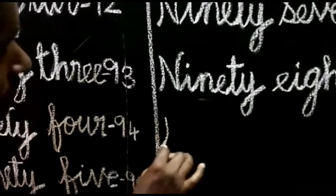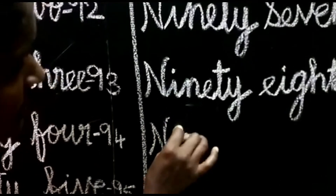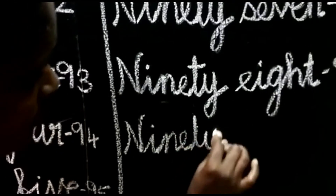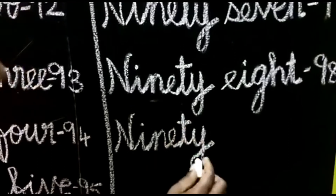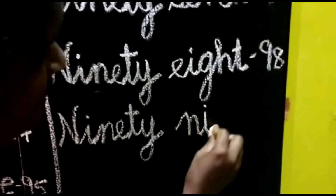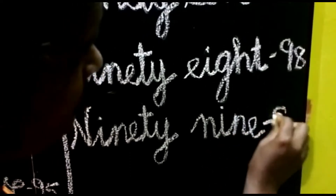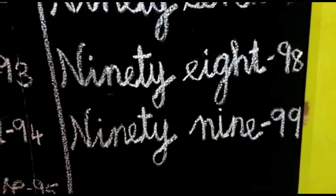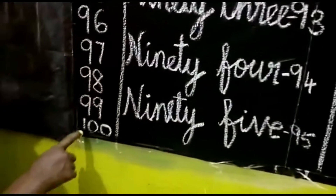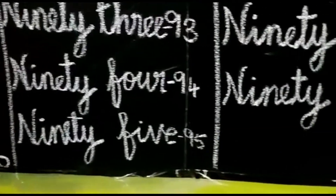Next number 99. N-I-N-E-T-Y. N-I-N-E. So 99. Then the last number: 1, 0, 0 — 100.